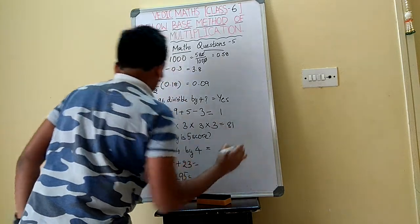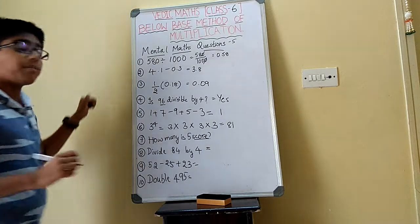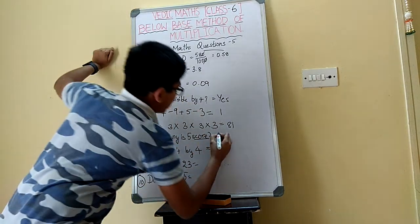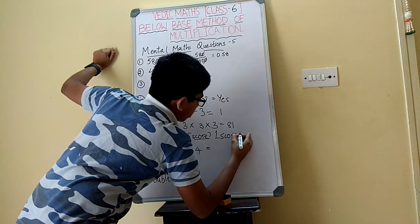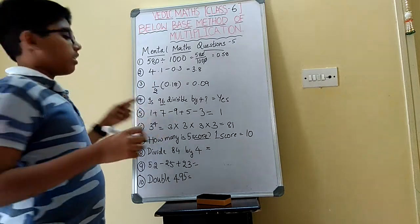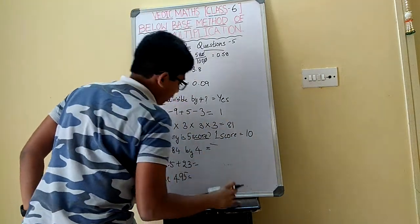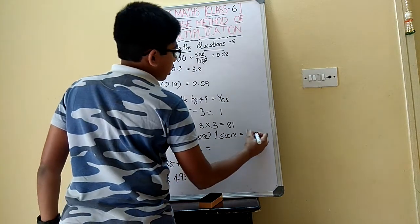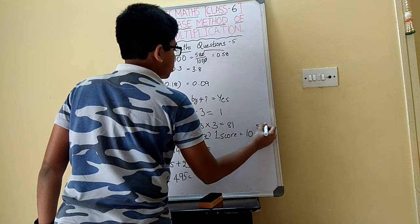Now the 7th question — you need to know what a score is. Before, we did dozens. Now we need to do scores. 1 score equals 10. Dozens was 12. So 5 into 10 will be 50, meaning 5 score will be 50. The answer here is 50.